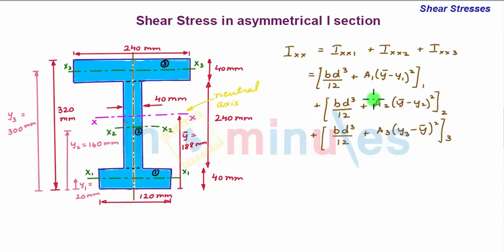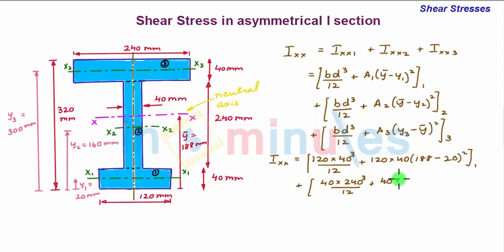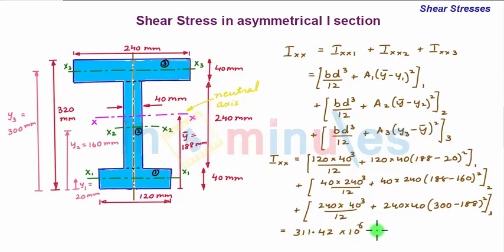Substituting values: for part 1, (120 × 40³)/12 + (120 × 40) × (188 − 20)²; for part 2, (40 × 240³)/12 + (40 × 240) × (188 − 160)²; for part 3, (240 × 40³)/12 + (240 × 40) × (300 − 188)². Solving, Ixx = 311.42 × 10⁶ mm⁴.